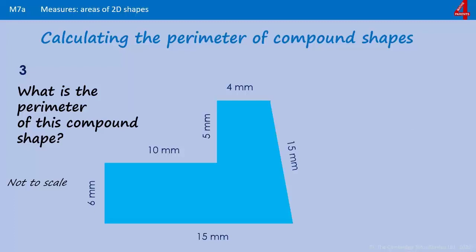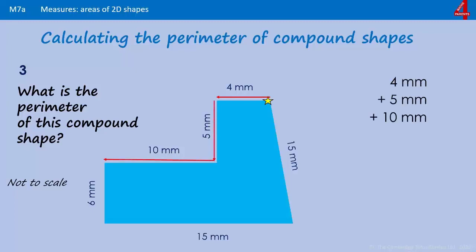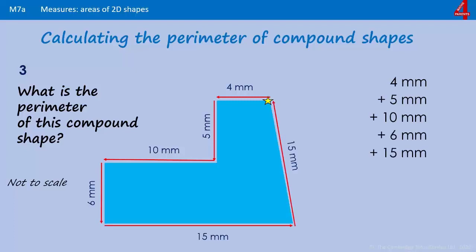And finally, one for you to have a go at — what's the perimeter of this compound shape? Pause the video and have a go. Starting here: four across, five millimeters down, ten millimeters across, six millimeters down, fifteen millimeters across, and fifteen millimeters back to the top. All together, the perimeter of this shape is 55 millimeters.